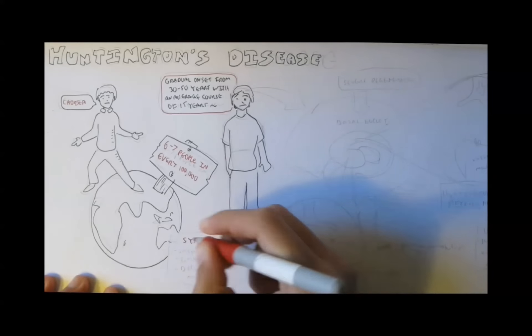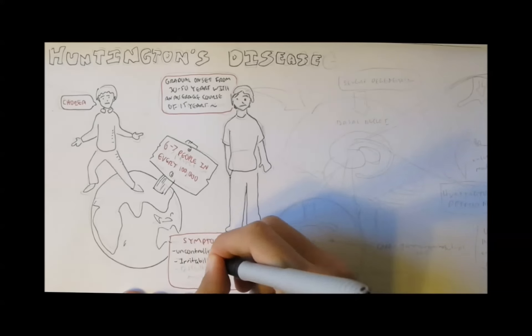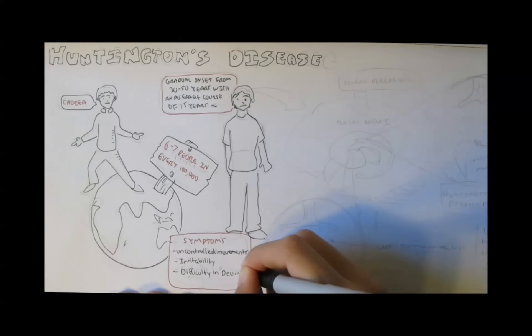Symptoms of HD, Huntington's disease, include uncontrolled movements, irritability, difficulty in decision making, and these are only some.